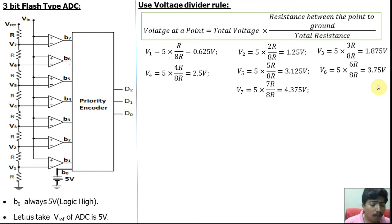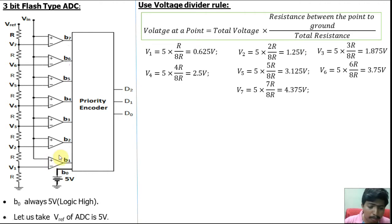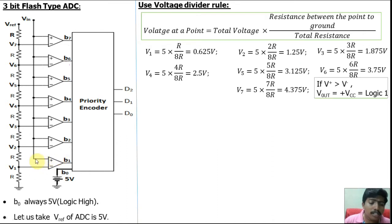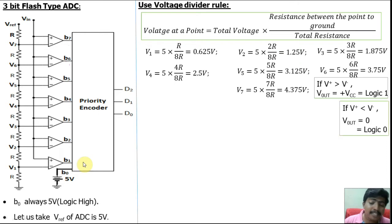Now, how does the comparator work? For the comparator, if the V+ terminal voltage is higher than the V− voltage, it gives positive output — that means logic 1. If V− is higher than V+, then the output will be 0, that means logic 0. This is the comparator operation.